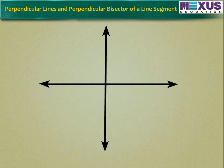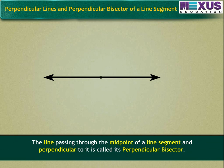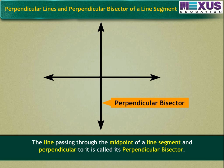We saw that two lines are said to be perpendicular to each other if they contain an angle of 90 degree between them. But for a line segment, the line passing through its midpoint and perpendicular to it is called its perpendicular bisector.